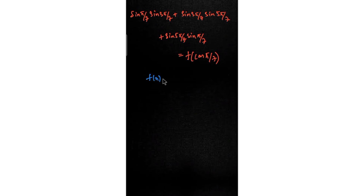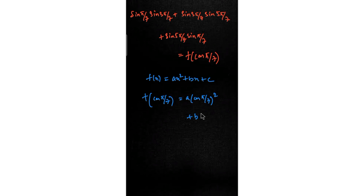The quadratic equation is f(x) = ax² + bx + c. If I substitute cos(π/7) for x, I get: a·cos²(π/7) + b·cos(π/7) + c. This must equal the left-hand side of the given equation. So my basic idea is to equate and convert the LHS into terms of cos(π/7).